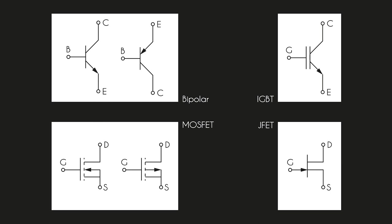We talked about bipolar transistors; now let's move to unipolar ones, especially MOSFETs. These transistors are controlled by voltage rather than current. Their pins are called gate, drain, and source. The control voltage is between gate and source, the output current is the drain current, and the output voltage is the drain-source voltage. The gate and source behave like a capacitor — current does not flow when a constant voltage is applied, but at the moment of switching, current flows for a short moment. The internal drain-source connection is called the transistor channel.